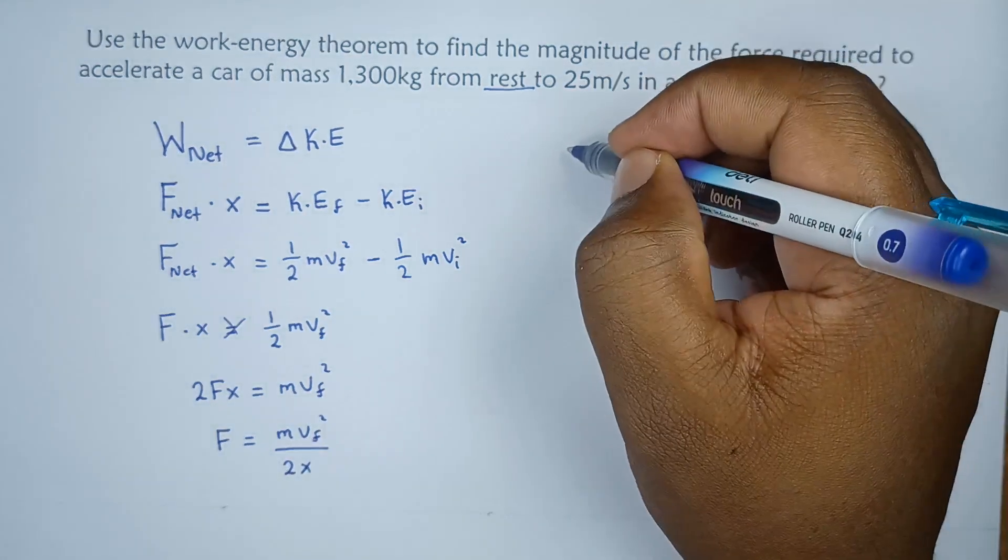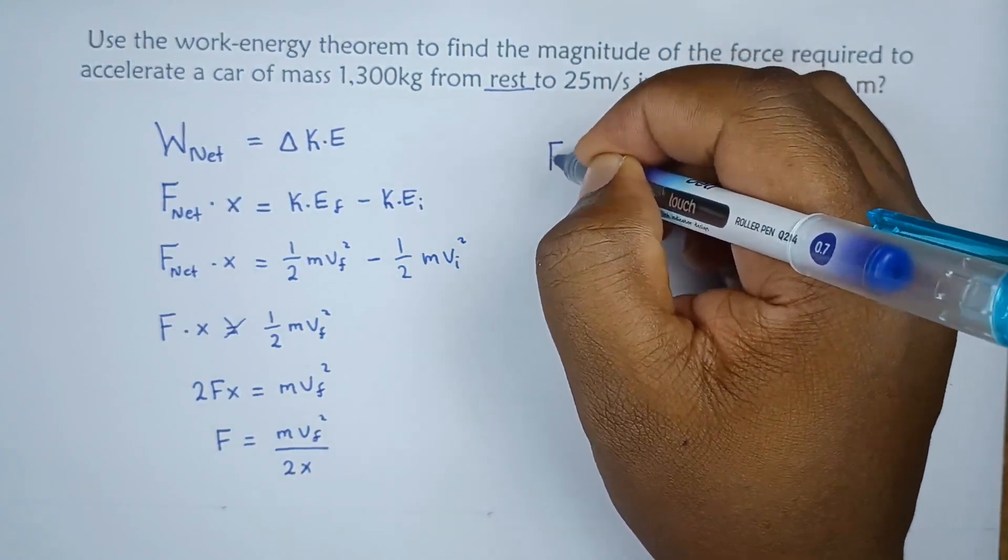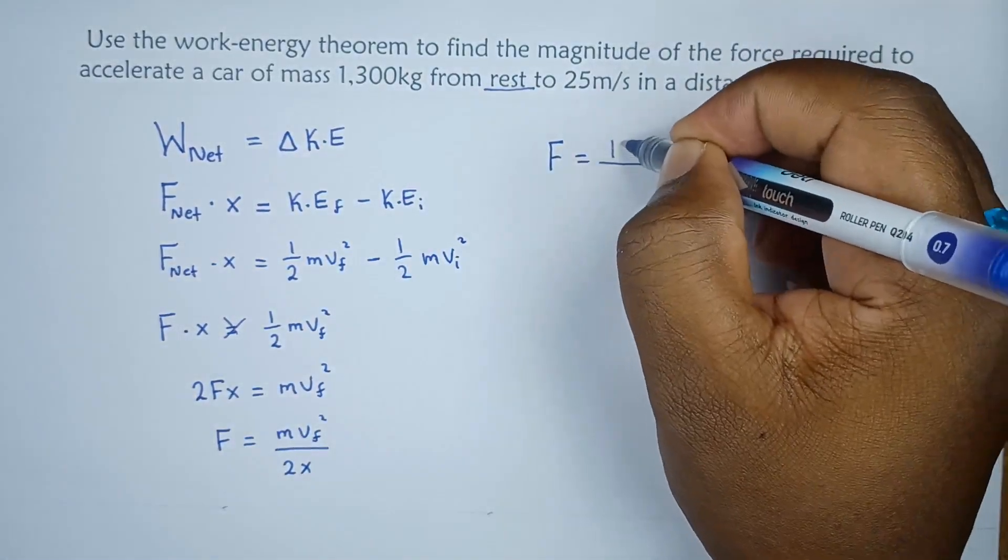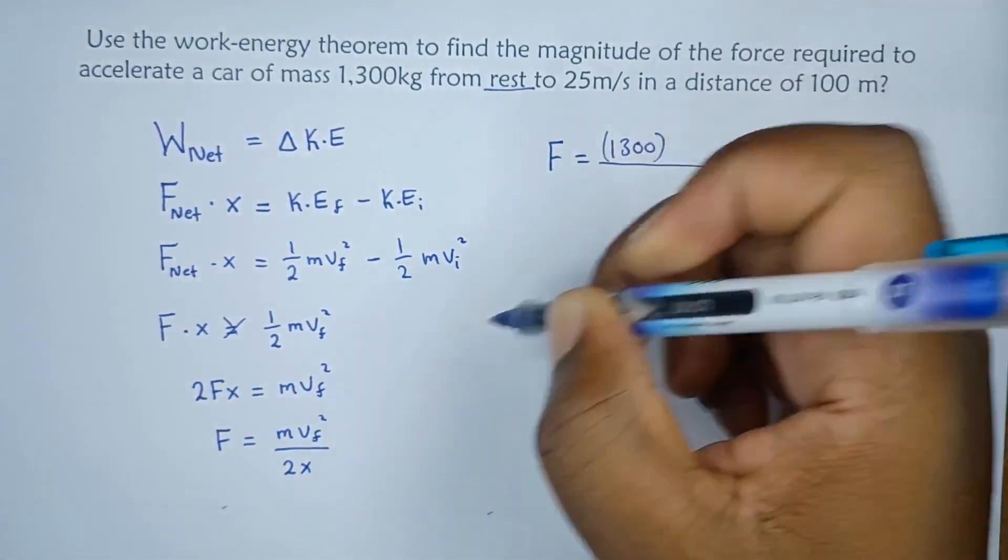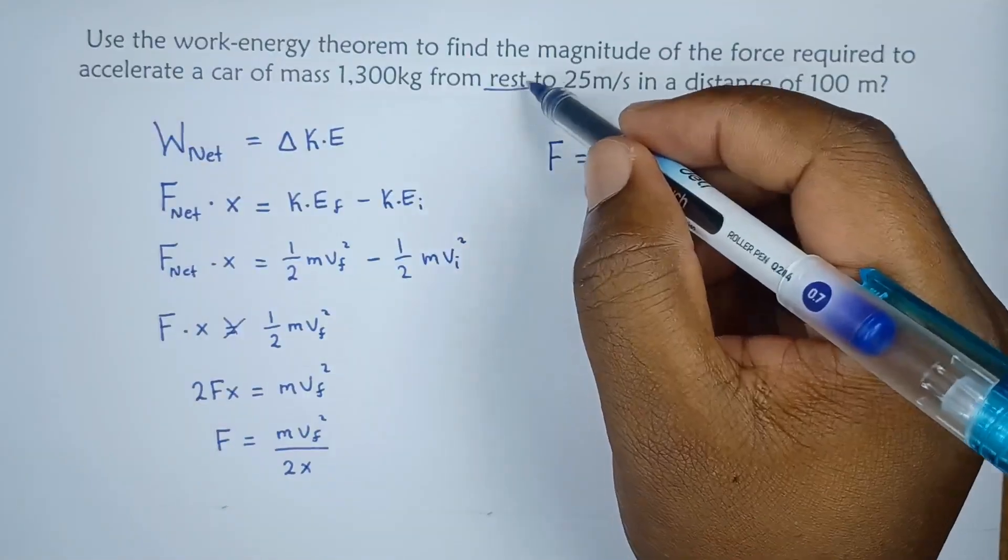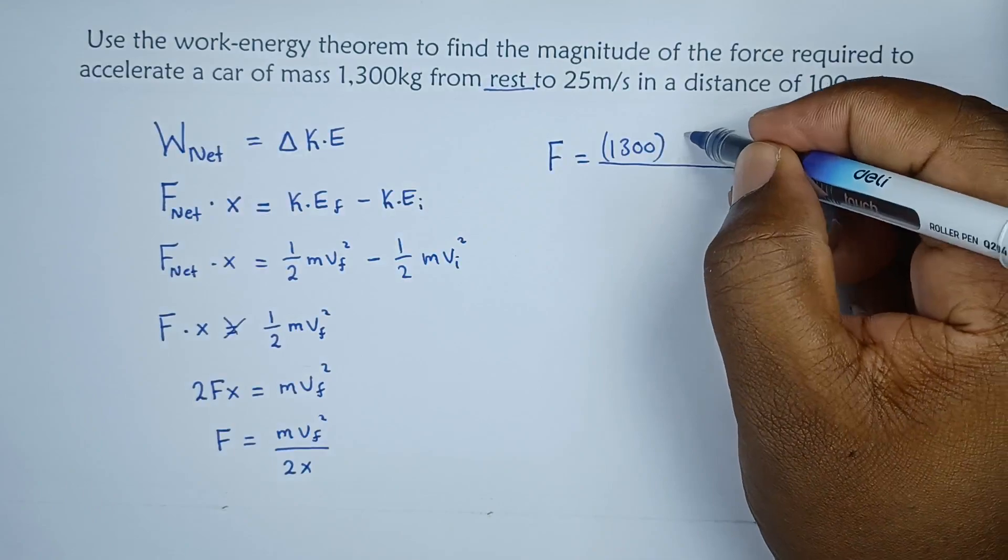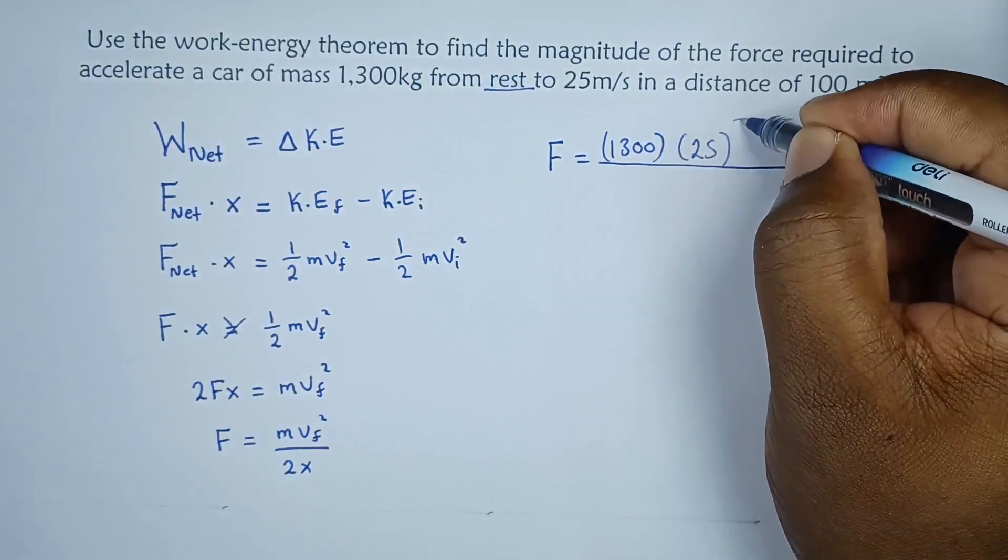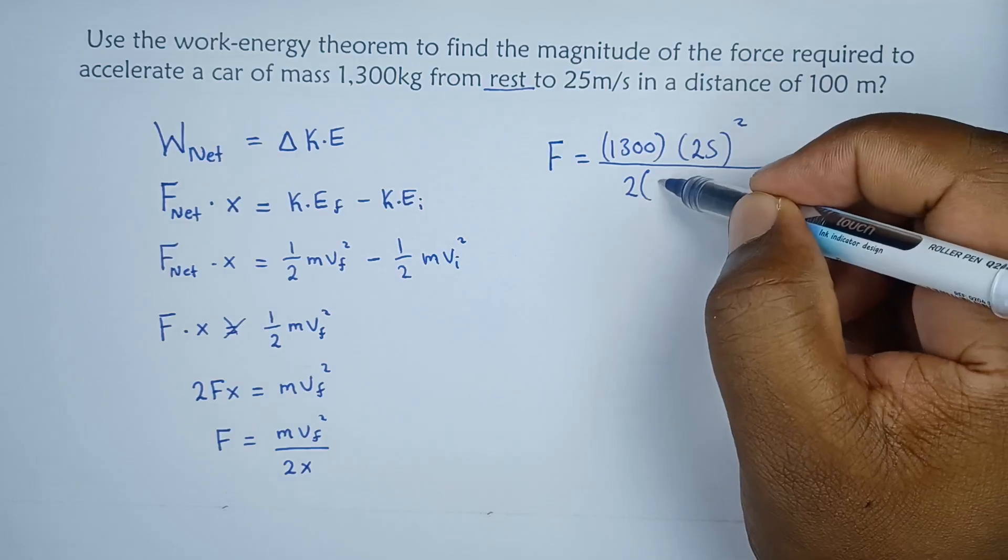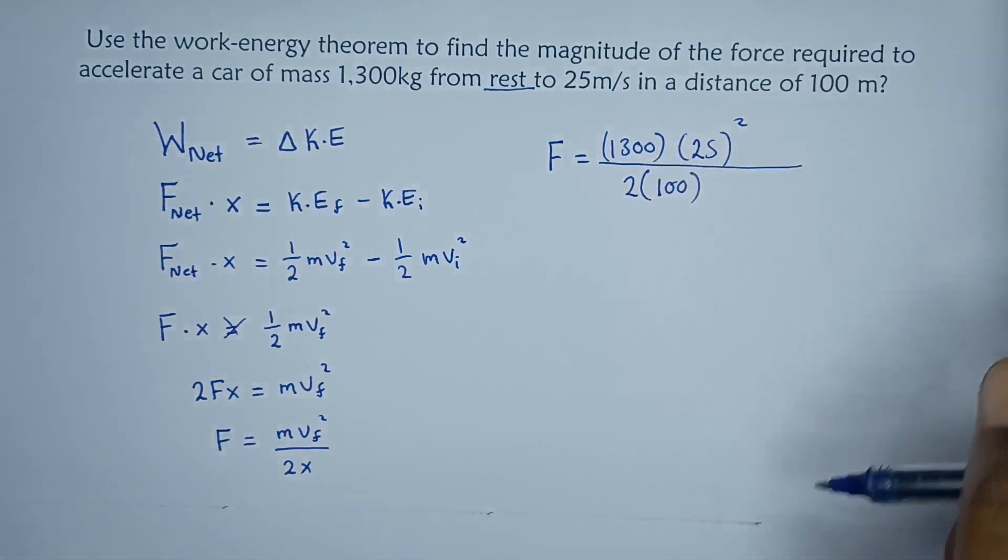So let's see what we get. The force will be equals to the mass given is 1,300. The velocity, the final velocity, remember it's from rest to this, so this is the initial, this is the final. The final is 25 and we have to square it, divided by 2 times the displacement which is 100 meters.